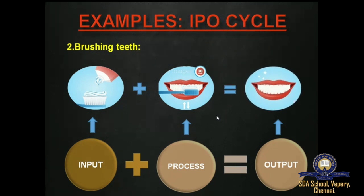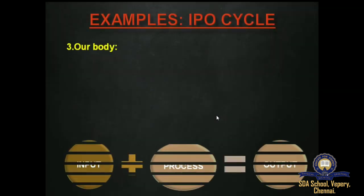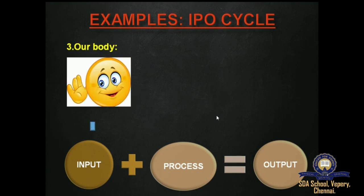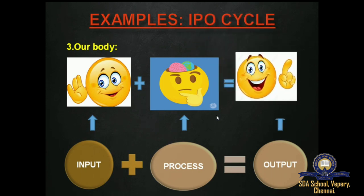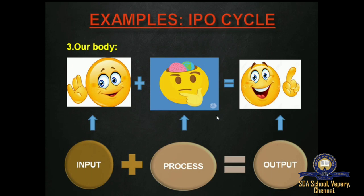The next example is our own body. If a teacher asks us a question, we hear it with our ears and see it with our eyes — this is how we receive the input. The process happens in our brain, which processes everything the teacher says, thinks of an answer, and orders us to speak. The brain works as the processing unit. Then the output is when we answer by speaking with our mouth, which works as the output unit.